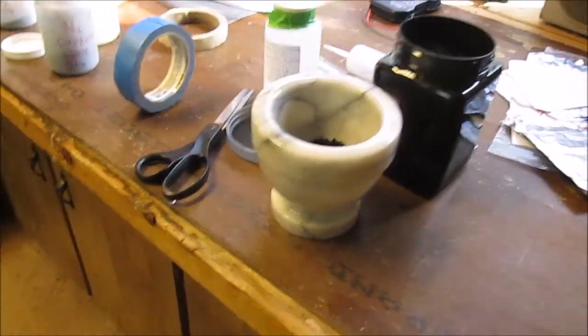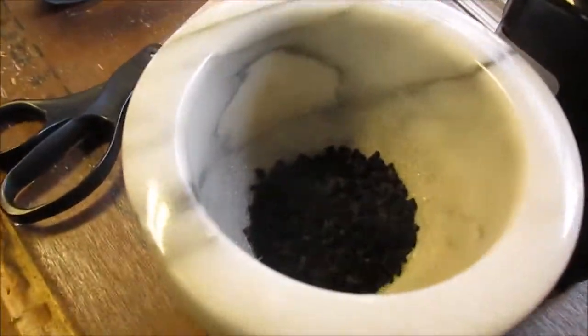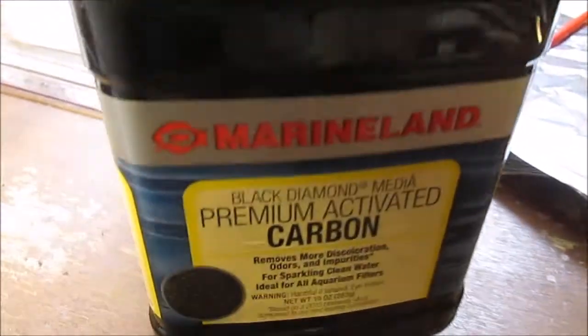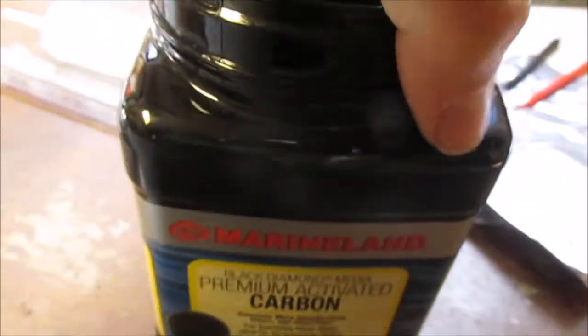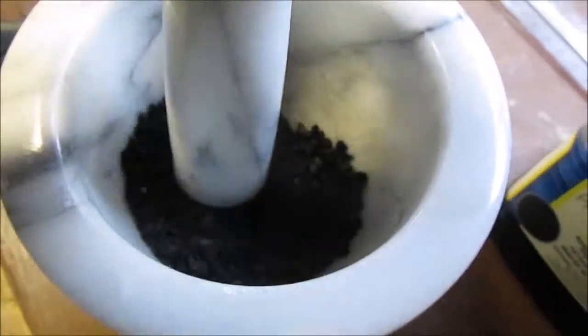Okay, so now we have actual industry activated carbon. We got Marineland Premium. It's really nice stuff. It comes in these disgusting looking chunks, and you can just grind it right up in there. And that'll be used for our other capacitors, which we're going to make in a second.